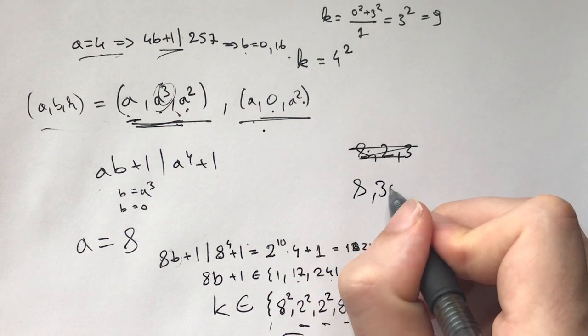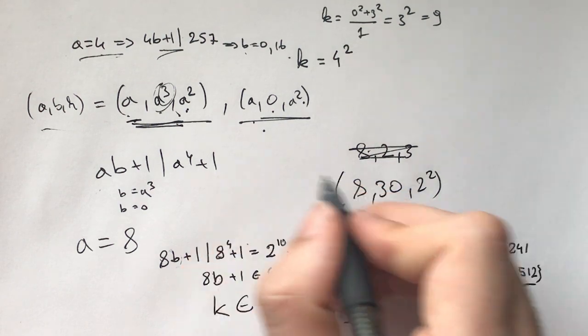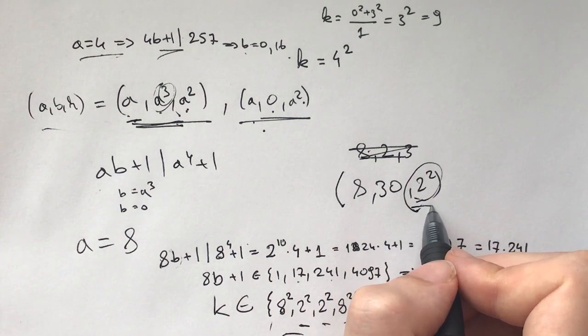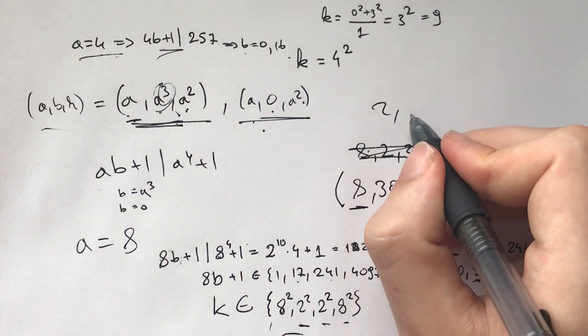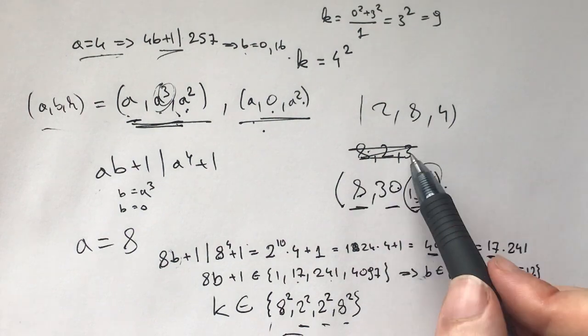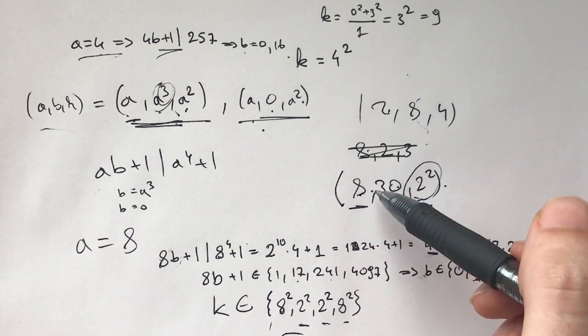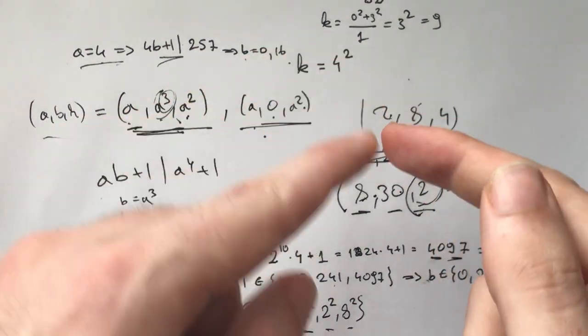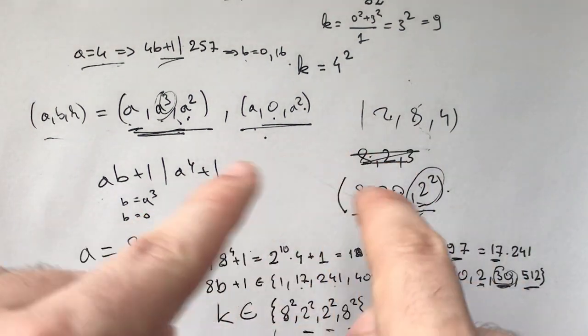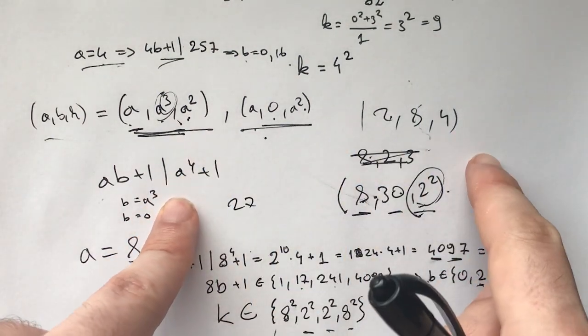And now, what is k in each and every one of these cases? And k is 8², 2², 2². So for 30, so we have a different solution. We have 8, 2, and 30. Not 8, 2. We have 8, 30, and 2². So this is another one, another solution where k is 2². Now, we have, so we have 2, 8, 4, and we have 8, 30, and 4. And now, I ask you, do you see any connection between these numbers, between this triplet and this triplet? What is a connection that you see?